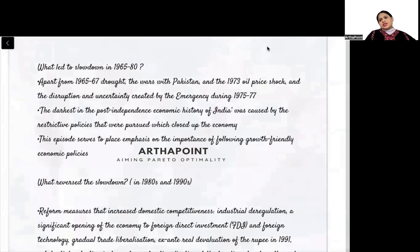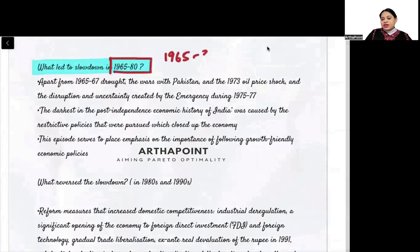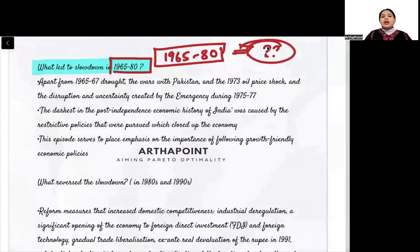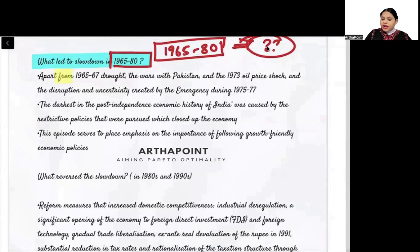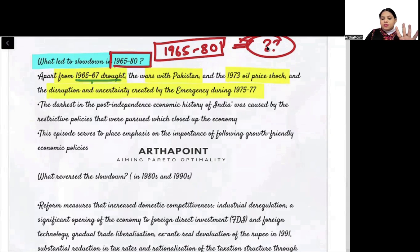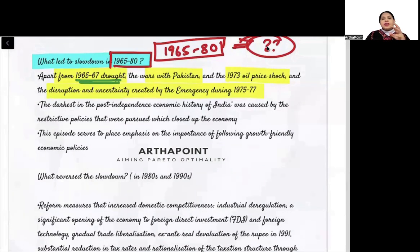Now, looking specifically at the period 1965 to 1980, what caused such a slowdown? What led to slowdown during this period? Apart from the 1965 drought — drought affected agriculture, and since agriculture is India's primary sector, it affected GDP. Second was war with Pakistan; whenever there are wars, resources go into fighting and GDP gets affected.